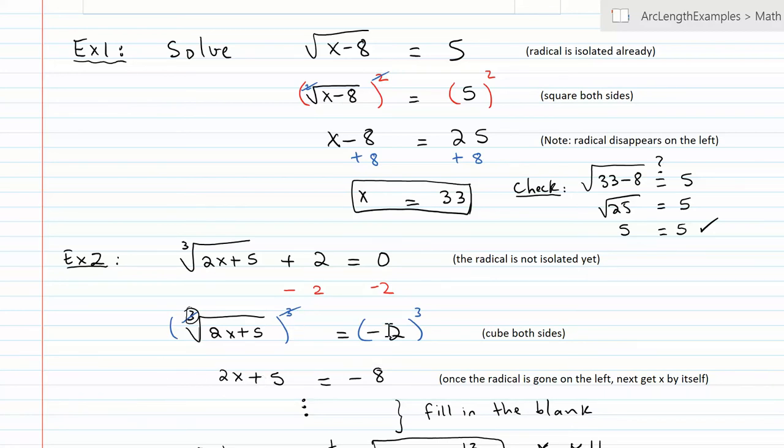So I've got to make sure I use the same power as the index. That's why I'm using a 3 on both sides. So don't forget, the right side would be negative 2 times negative 2, this many times times negative 2, which gives me negative 8. That's usually where the mistakes happen. Not squaring or not cubing correctly.